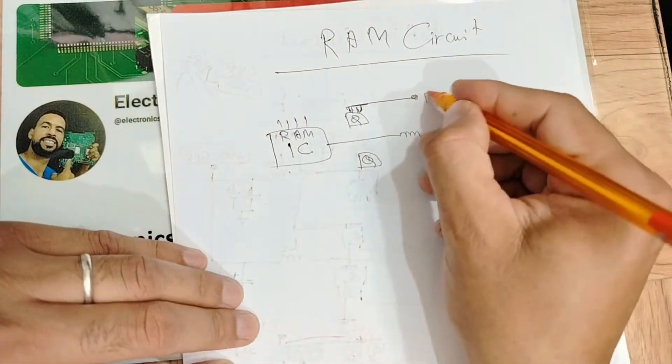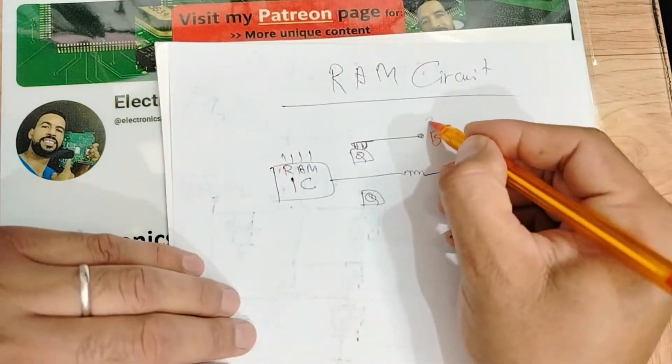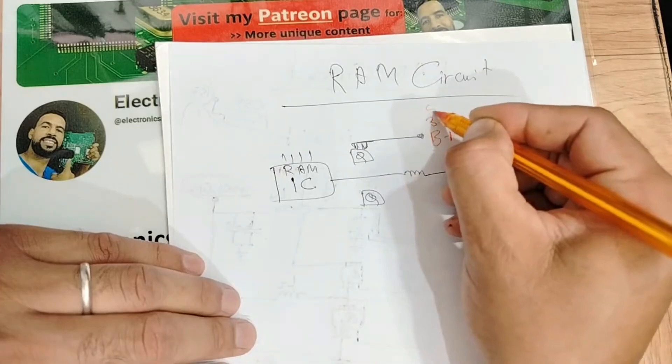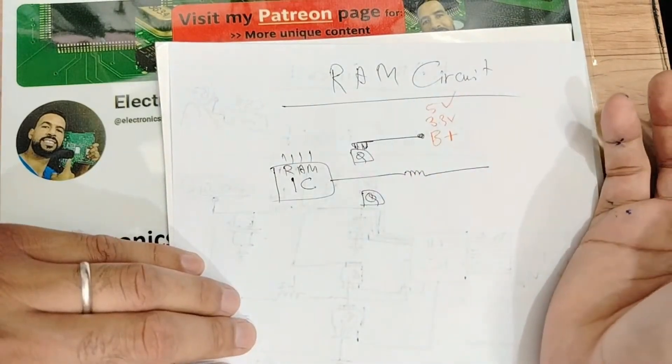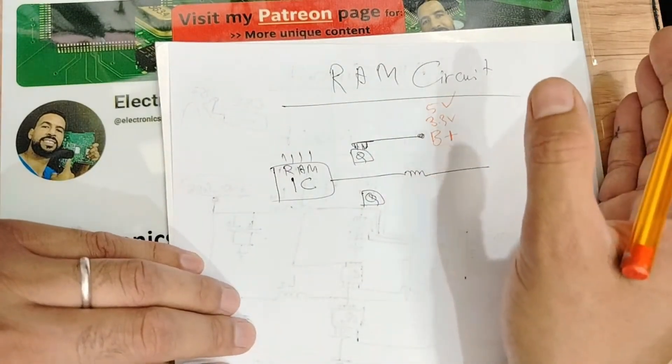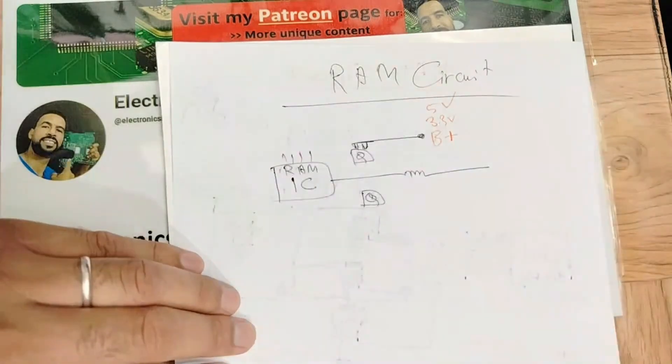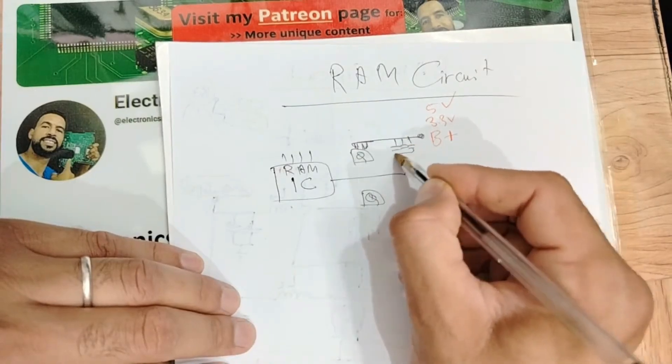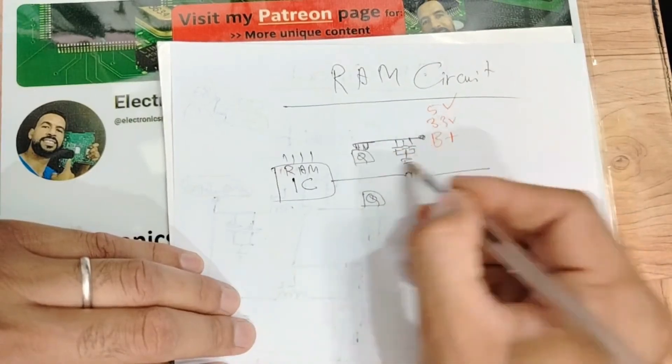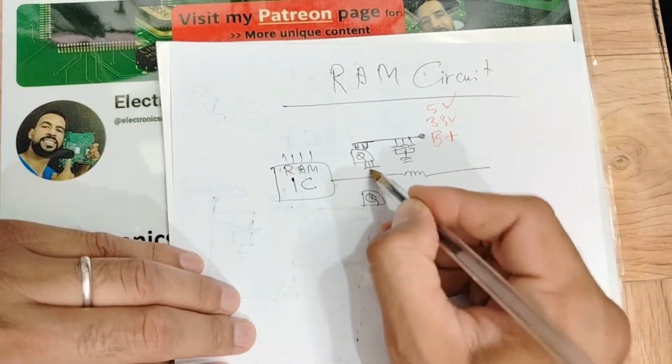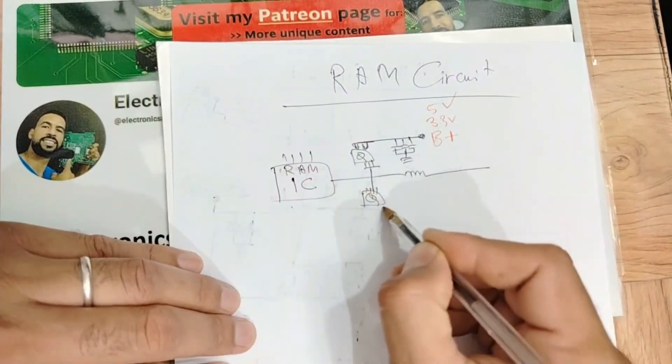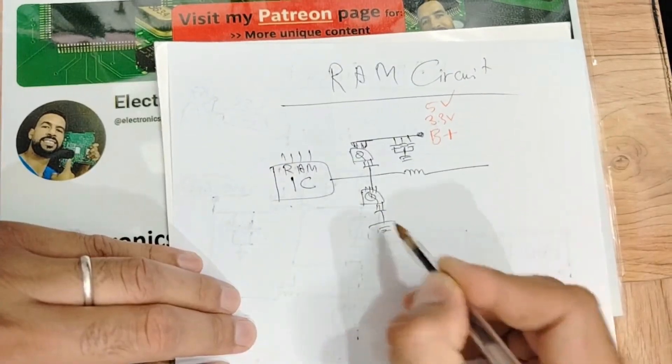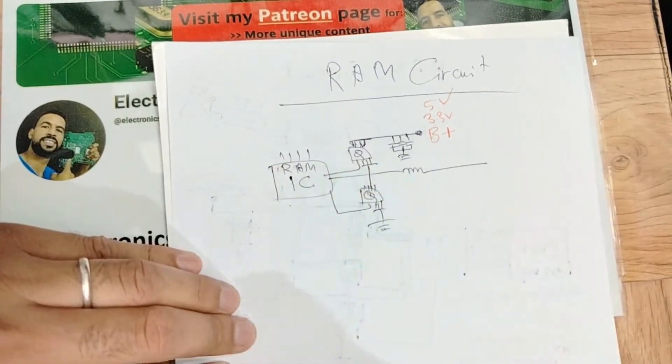This MOSFET will be connected to what? It will be connected to B+, sometimes to B+, sometimes to 3.3 volts, and sometimes to 5 volts, depending on the type of laptop. Of course here always we have ceramic capacitors connected to ground, the drain connected to input, the source connected to the ground, here controlled by device.